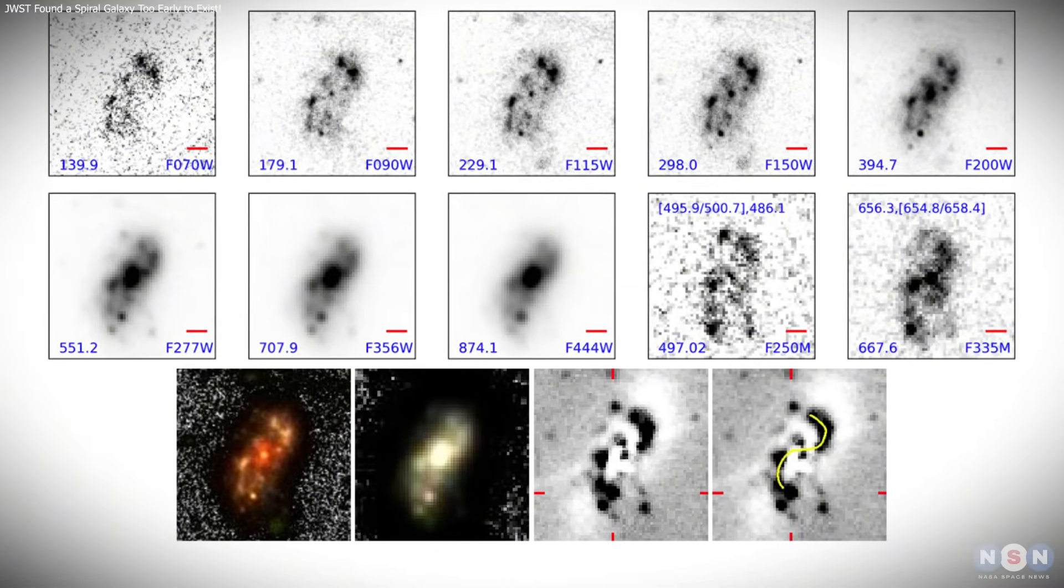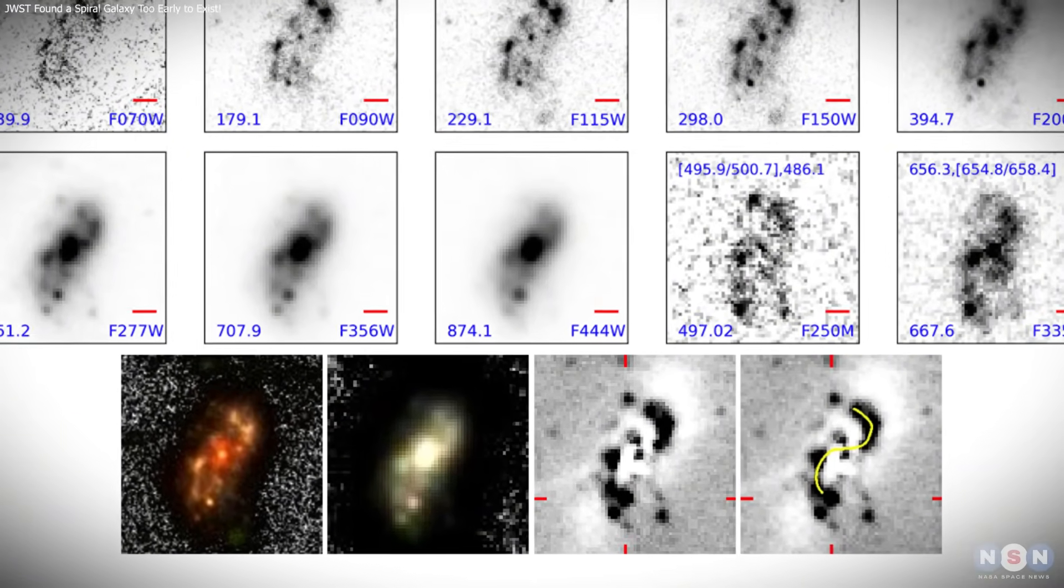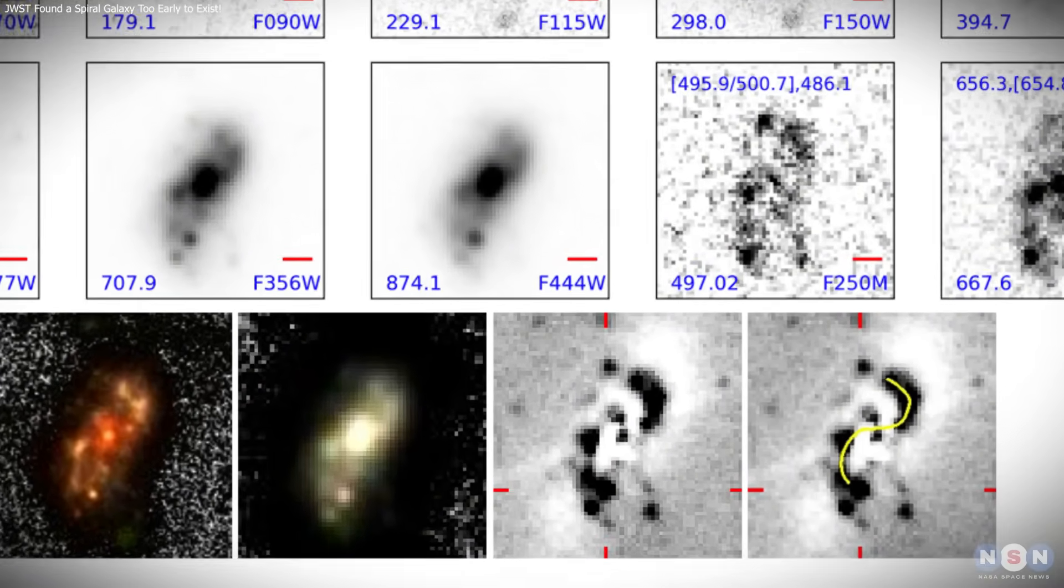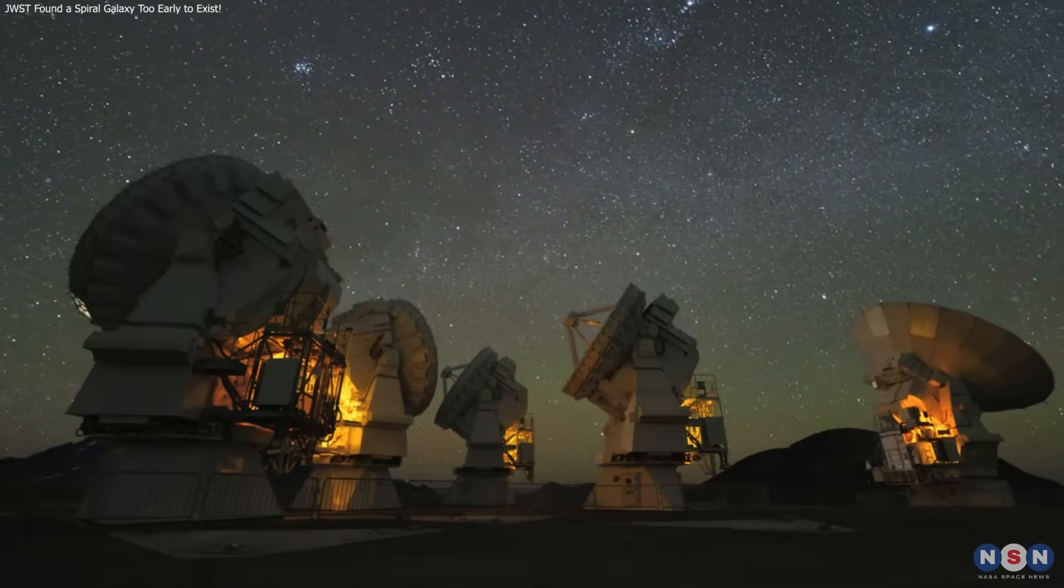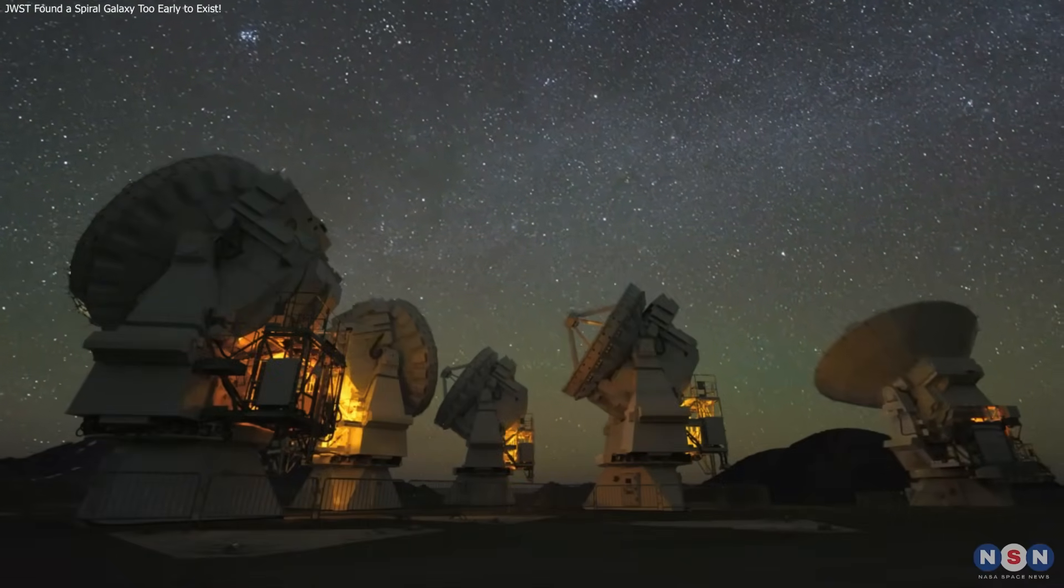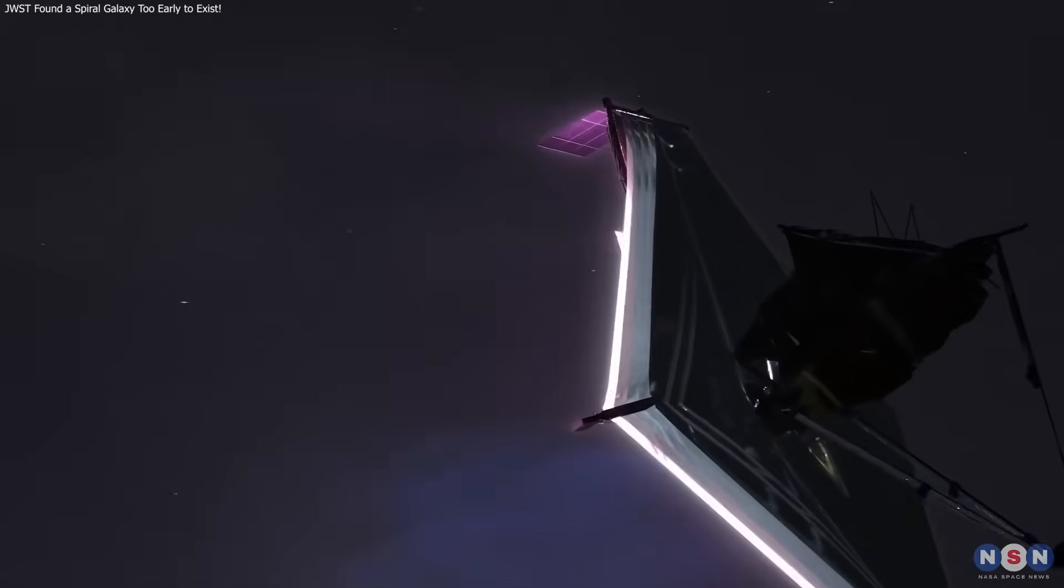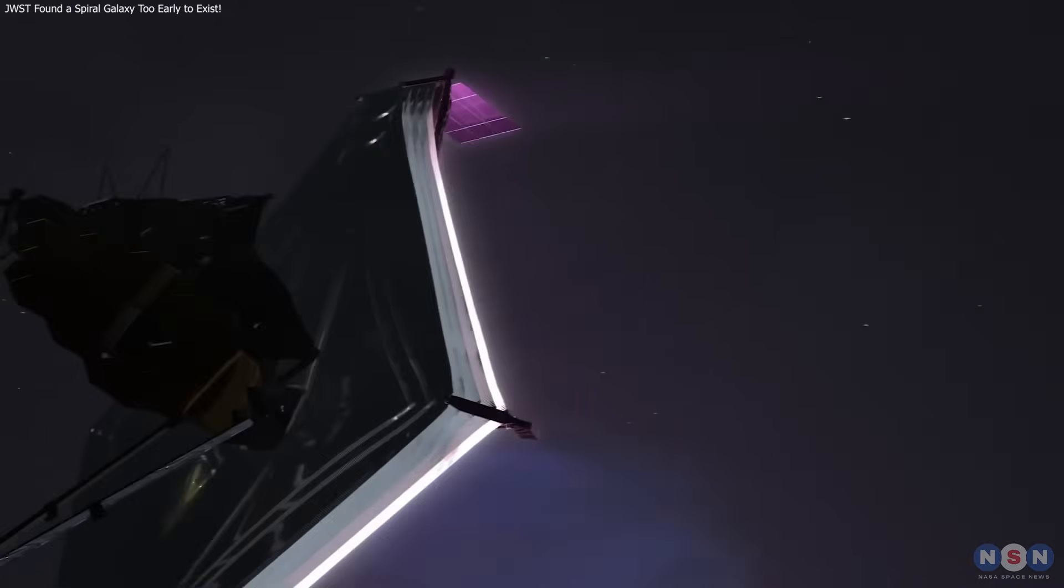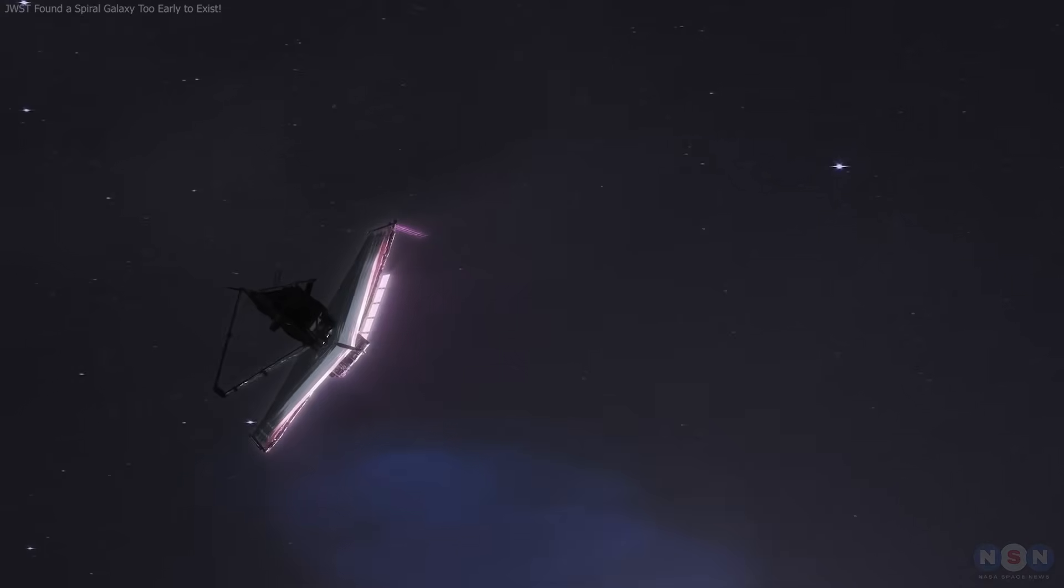Alec Nanda shows that galaxies could organize into stable structures far earlier than expected. Upcoming observations will clarify how such systems formed and how common they were. JWST continues to reveal an early universe that challenges our assumptions.